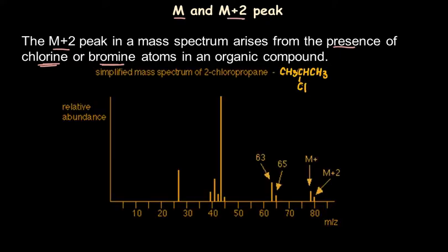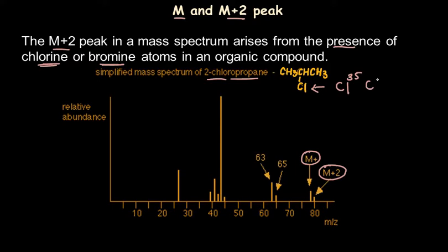Here we can see a simplified mass spectrum of 2-chloropropane, that is CH3CHClCH3. We can see that there is a peak at M+1 and M+2 also. This is because of the presence of chlorine. We know that chlorine has two isotopes, chlorine-35 and chlorine-37. So if some molecules have chlorine-37, we may get a peak at M+2 as well.